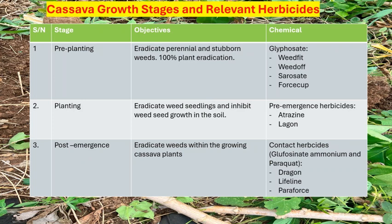At that stage, your cassava stem is also becoming woody, so even if the chemical touches it, it will not kill the plant. As long as the cassava stem is brownish in color, the chemical can no longer kill it. All the herbicides used as post-emergence are contact herbicides — they only affect the plant they touch. A common example is glufosinate ammonium. Paraquat is another, but it is now banned in Nigeria because it is carcinogenic.